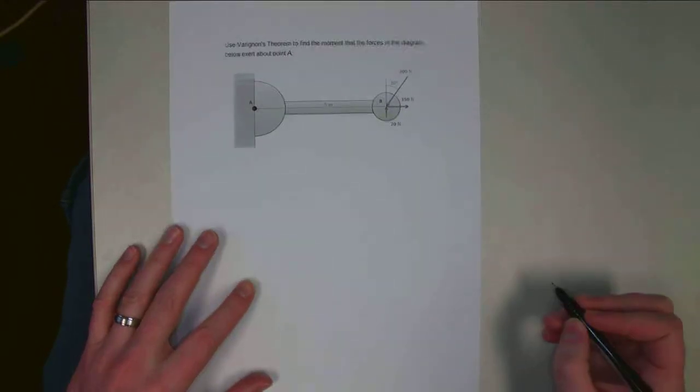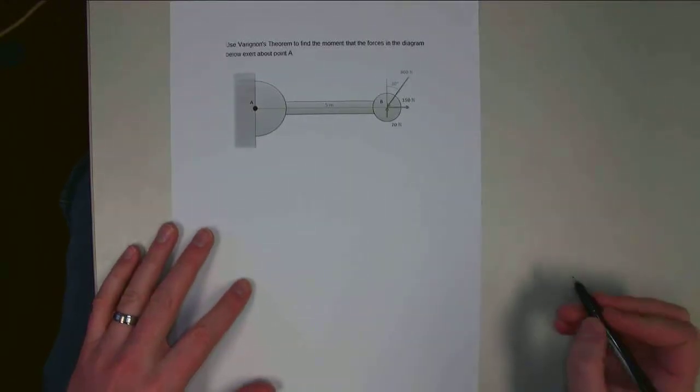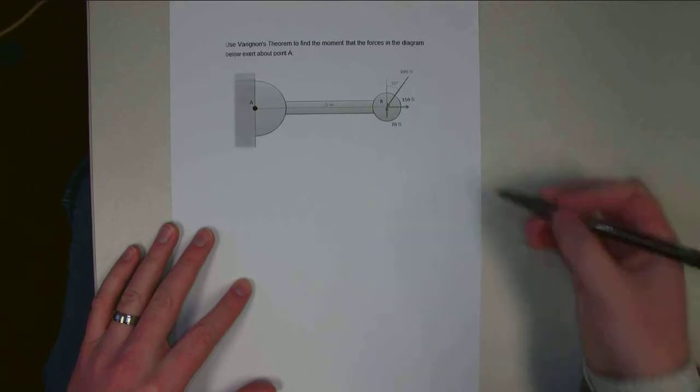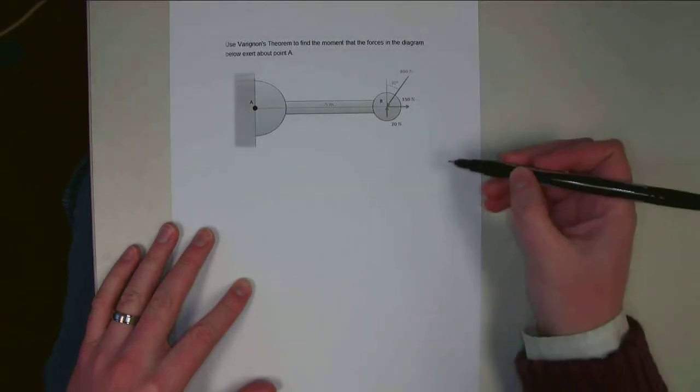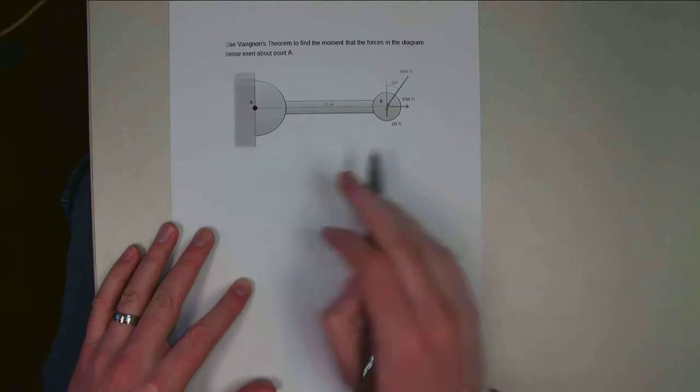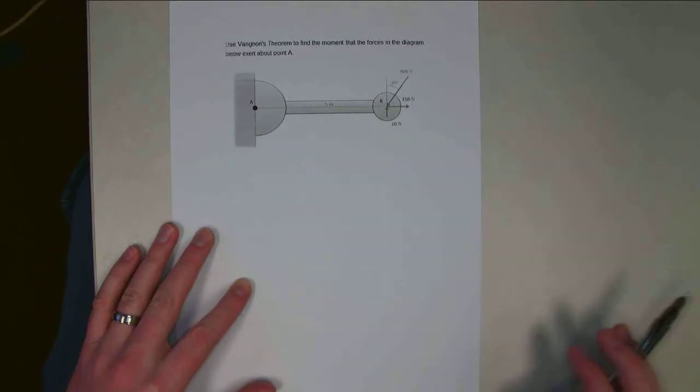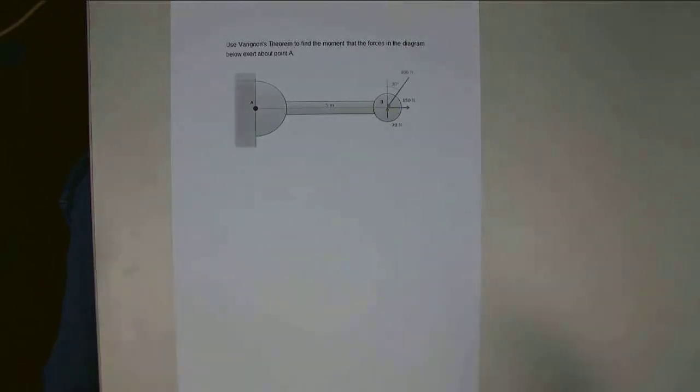Hello. For this worked example, we are asked to use Varanian's Theorem to find the moment that these three forces exert about point A over here. So we've got some lever, we've got a number of forces acting on the same point, and we're going to find the overall moment.